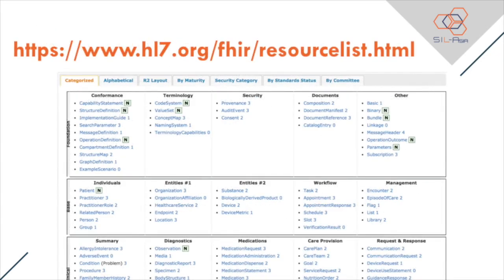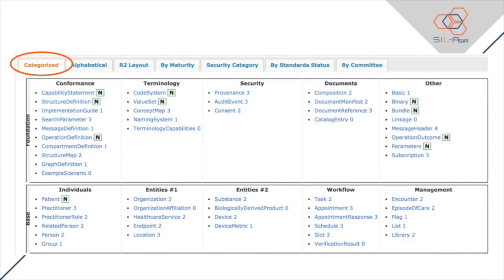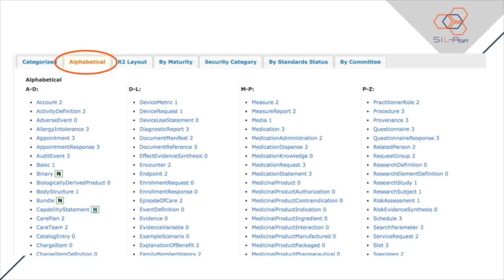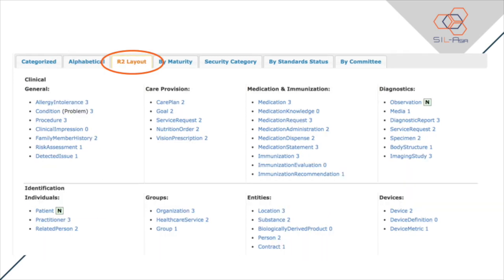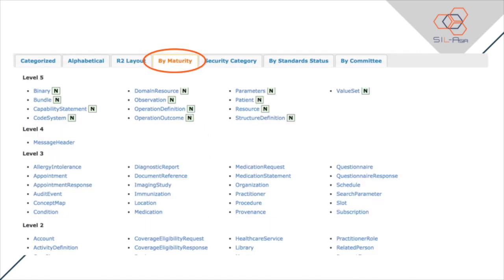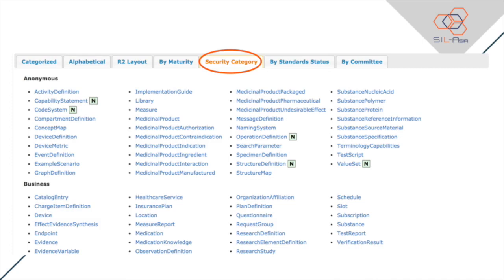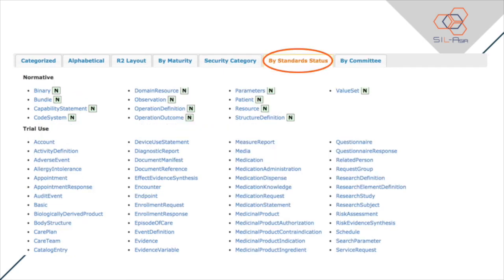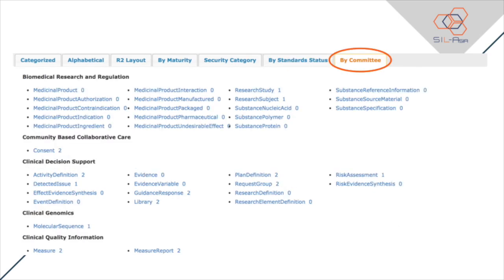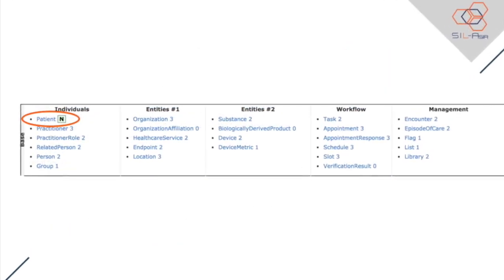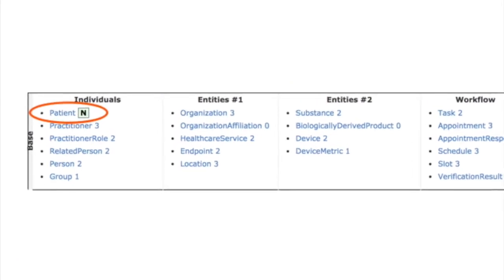Most of the resources can be found in the resource list at www.hl7.org/fhir/resourcelist.html. Resources in the resource list can be seen in different ways: categorized by functionality, alphabetical, following R2 layout, by maturity, security category, by standard status, or by committee. To see the specifications of a specific resource, you may click the resource name, which is a link.